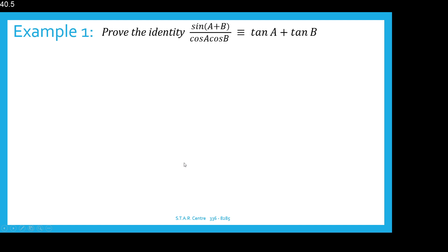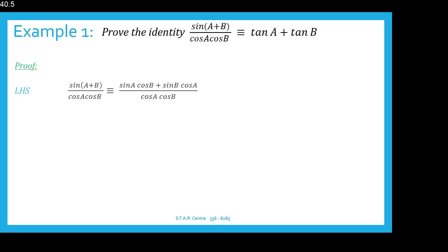Example 1: Prove the identity that sine of A plus B over cos A cos B is identical to tan A plus tan B. Just as we looked at in our previous tutorial, to prove an identity we start looking at one side and use the necessary formulas or identities to substitute and simplify, expand brackets — whatever we need to do to eventually get the result on the other side of the identity.